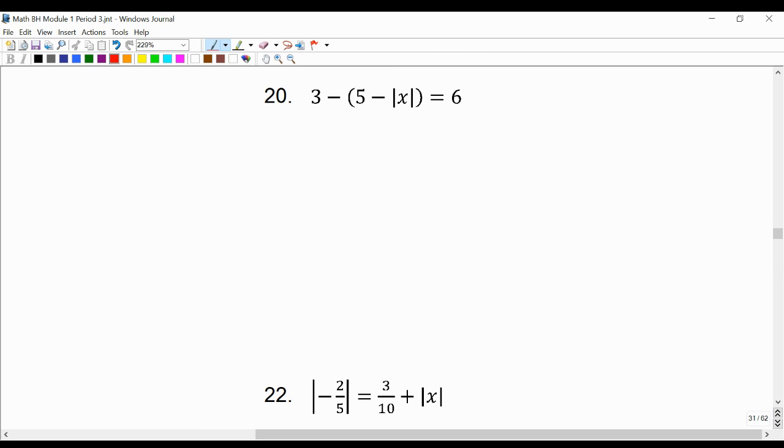We're going to solve 3 minus the quantity 5 minus absolute value of x equals 6. We're going to start by getting rid of these parentheses and distributing a negative 1.